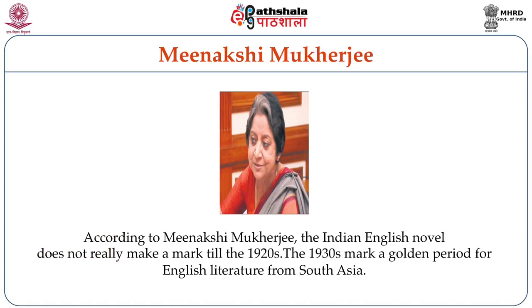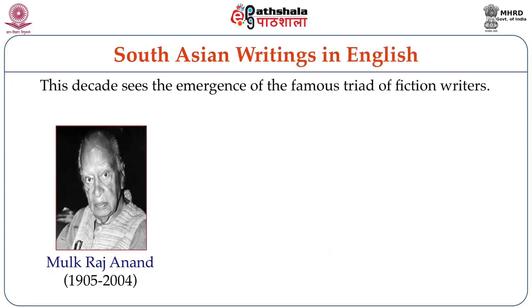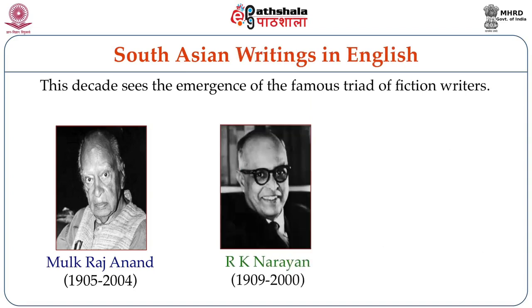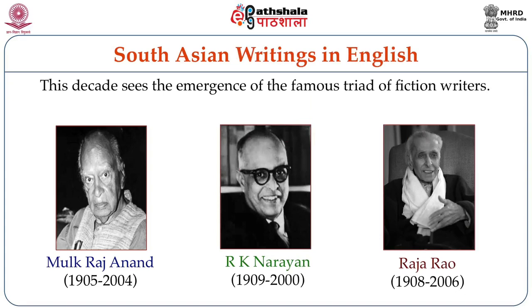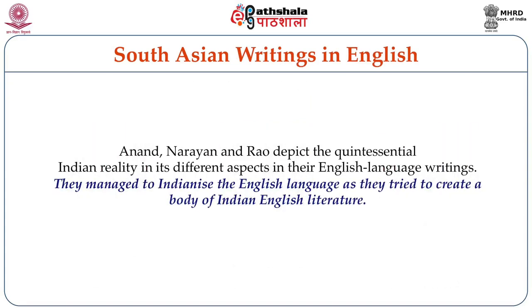The Indian English novel really begins to make a mark in the 1920s and 1930s. The 1930s is a golden period because this decade sees the emergence of the famous triad of Indian English novelists: Mulk Raj Anand (1905–2004), R.K. Narayan (1909–2000), and Raja Rao (1908–2006). All three writers try to depict the quintessentially Indian reality in its different aspects as they write in English. They managed to Indianize the English language even as they created a body of Indian English literature.